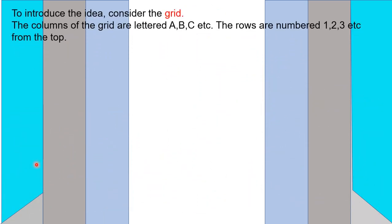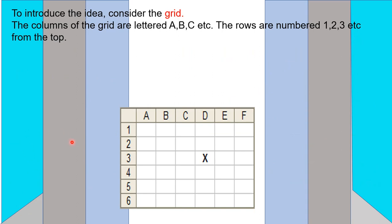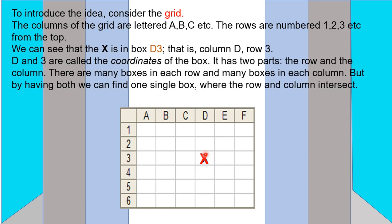Observe this grid. The columns in this grid are lettered from A, B, C, D and so on. Similarly, the rows are numbered from 1, 2, 3, 4 up to 6. Now, if we want to write the position of the point X in this box, we say it is in column D and row 3. So the position of this point X is D3.